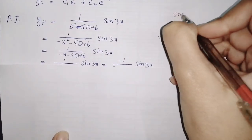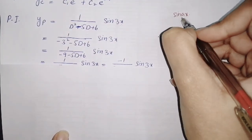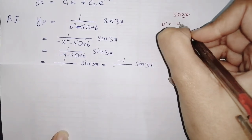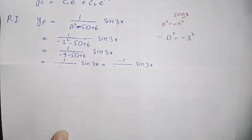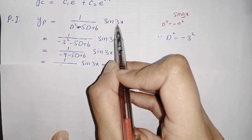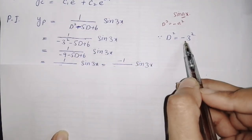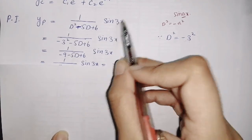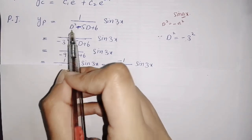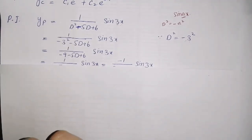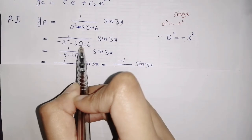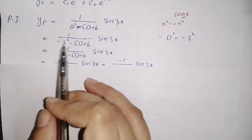The rule is: if we have sin(ax), and D² is present, then D² becomes equal to −a². Here the coefficient of x is 3, so we replace D² with −(3²) = −9. We only replace the even powers of D. So with 5D remaining and +6 from the denominator, we get −9 from D² = −3².